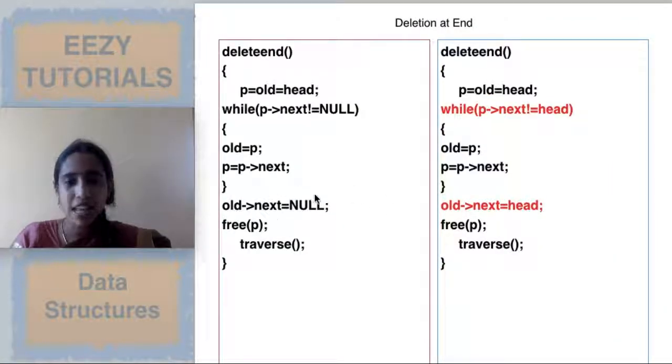Next, old of next is null you will be doing in linear list. In circular list you have to make old of next as head. Then you can delete. So this is how you will be doing deletion at the end.